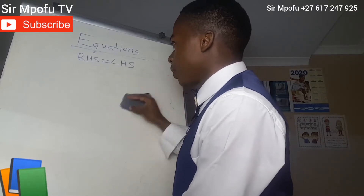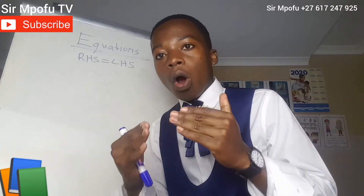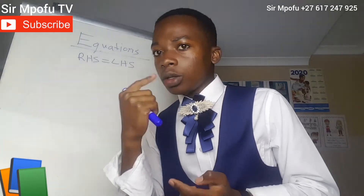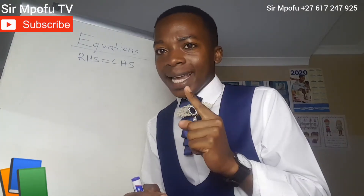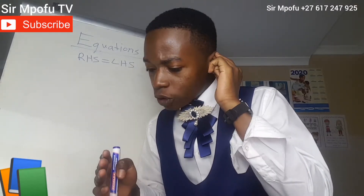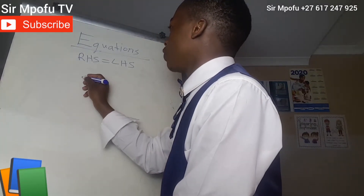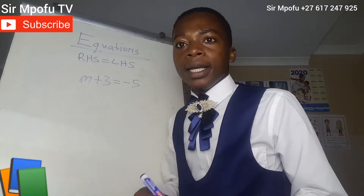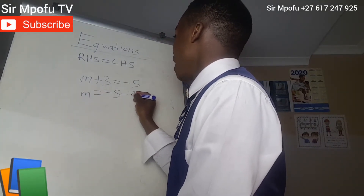Let us do another example. This is not complicated. You just have to know change side, change side. If you can know and understand a song with a duration of maybe 3 minutes with every lyric, don't tell me you cannot keep in mind something that lasts one second — just know change side, change side. Let's say we have m plus 3 equal to negative 5. Change side, change side. M equals minus 5 minus 3.